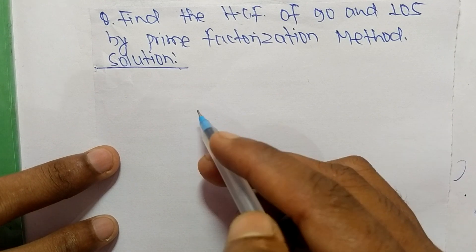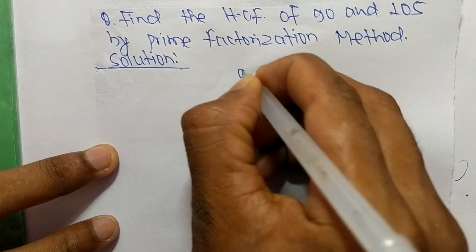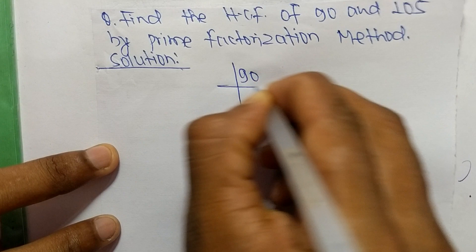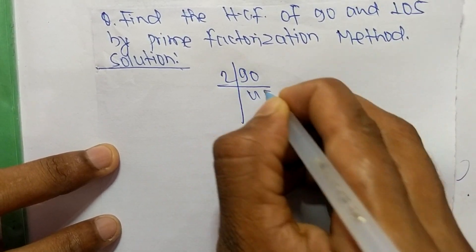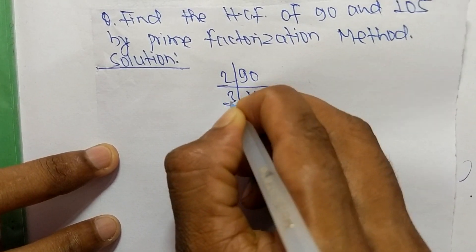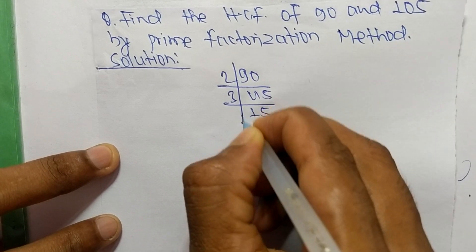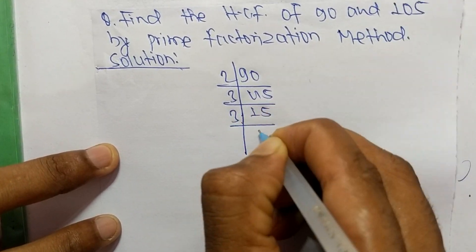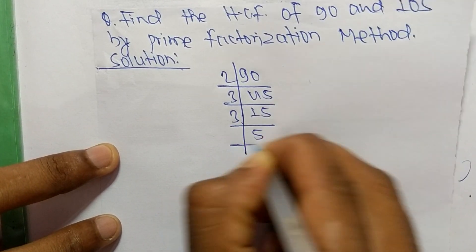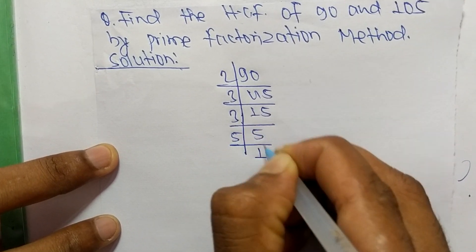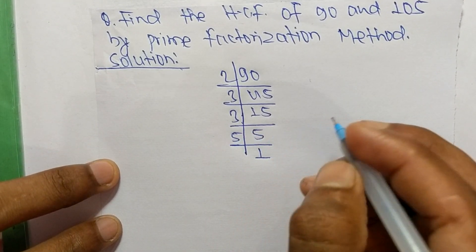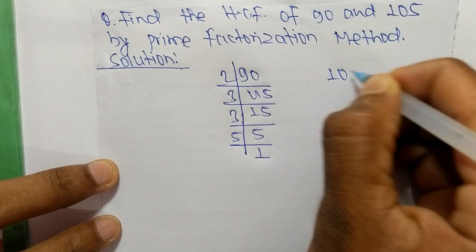So first we find out the prime factors of 90. So it is 2 times 45 mean 90, 3 times 15 mean 45, 3 times 5 mean 15, and 5 times 1 mean 5. Like as the prime factors...